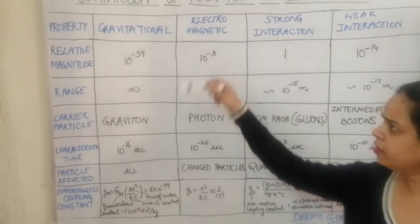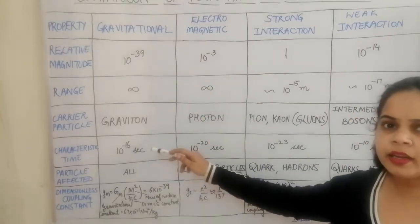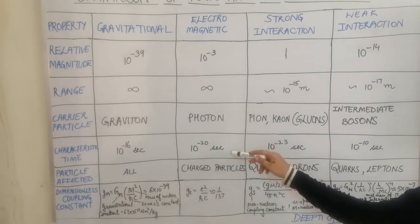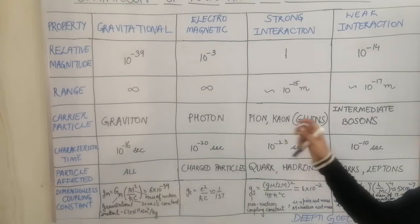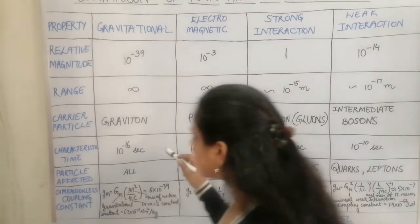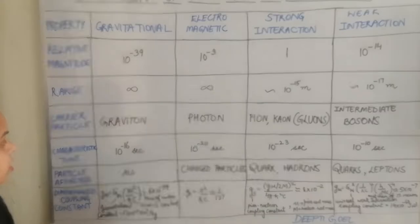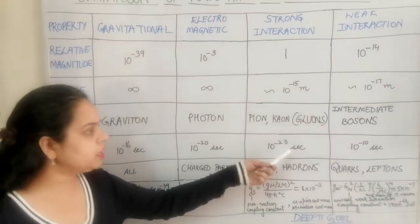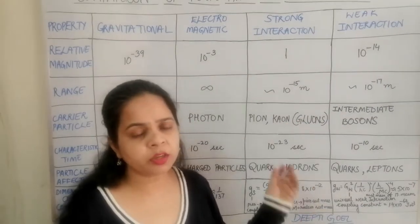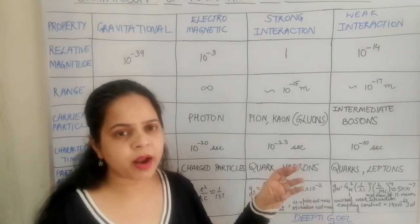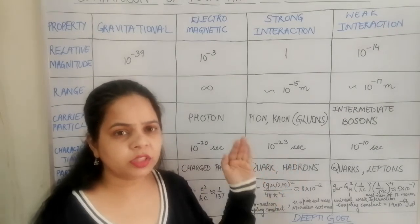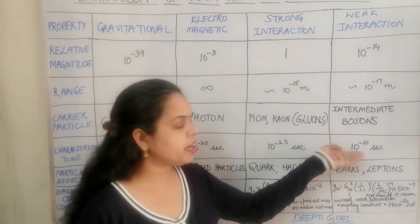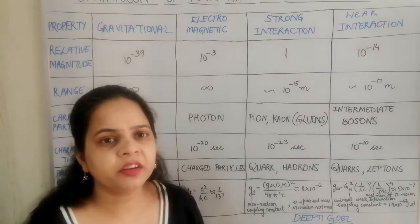The characteristic time for gravitational interaction is 10 raised to power minus 16 seconds. For electromagnetic interaction it is 10 raised to power minus 20 seconds — much smaller than for gravity. For strong interaction the characteristic time is 10 raised to power minus 23 seconds. For weak interactions, the particles decay with a characteristic time of 10 raised to power minus 8 to minus 10 seconds, so approximately 10 raised to power minus 10 seconds.